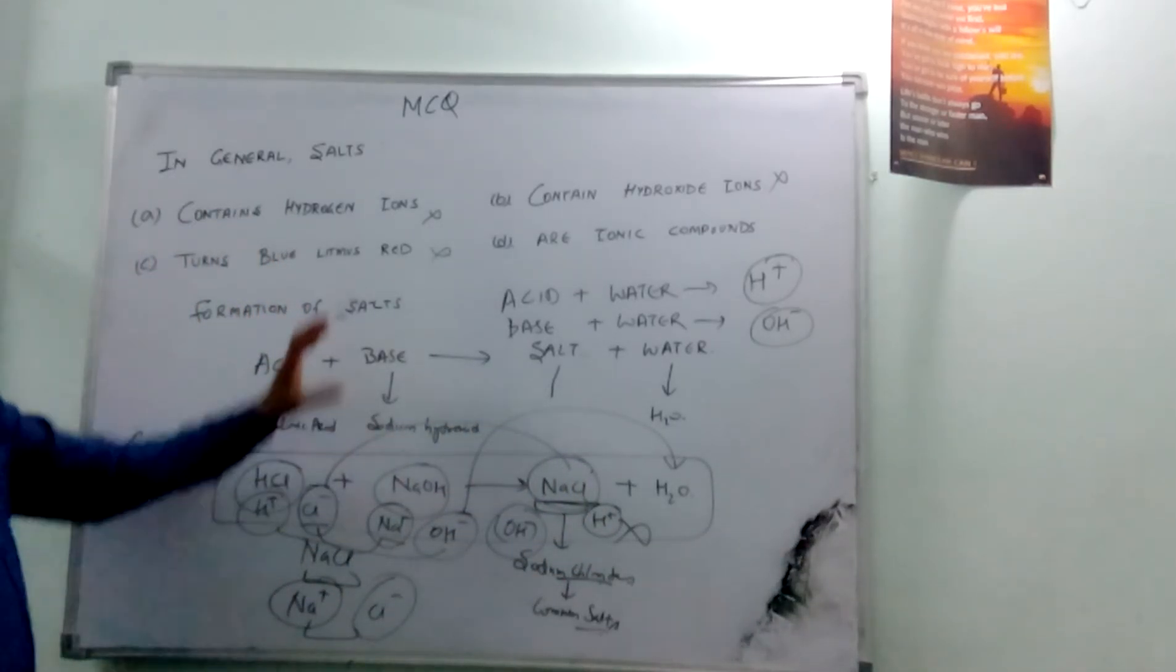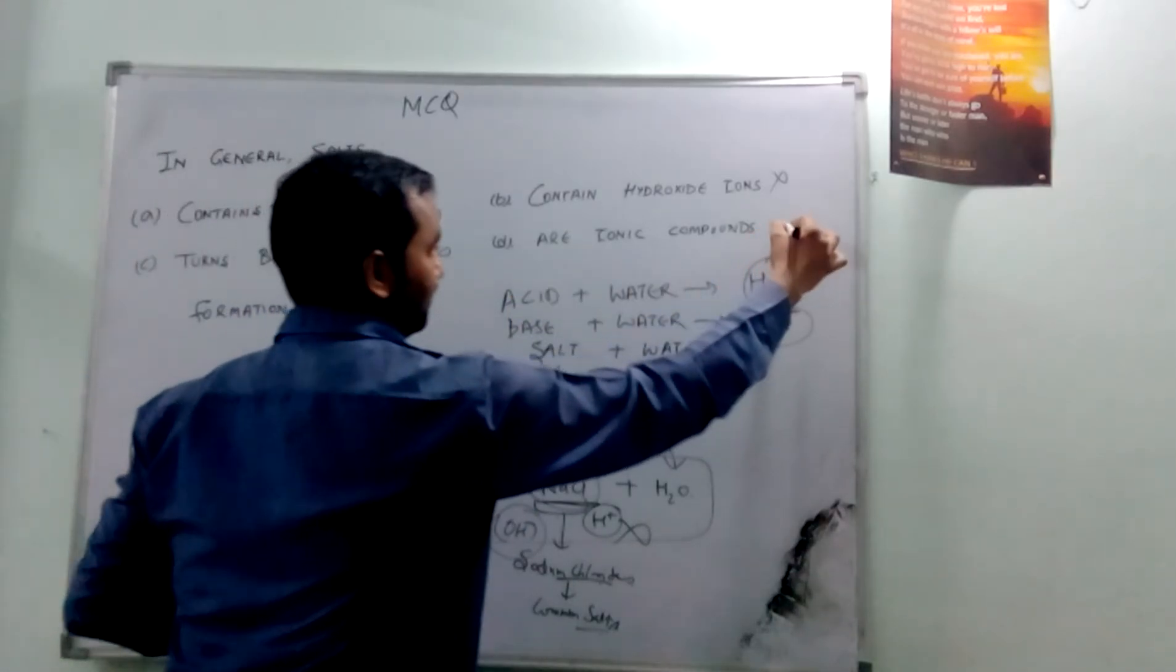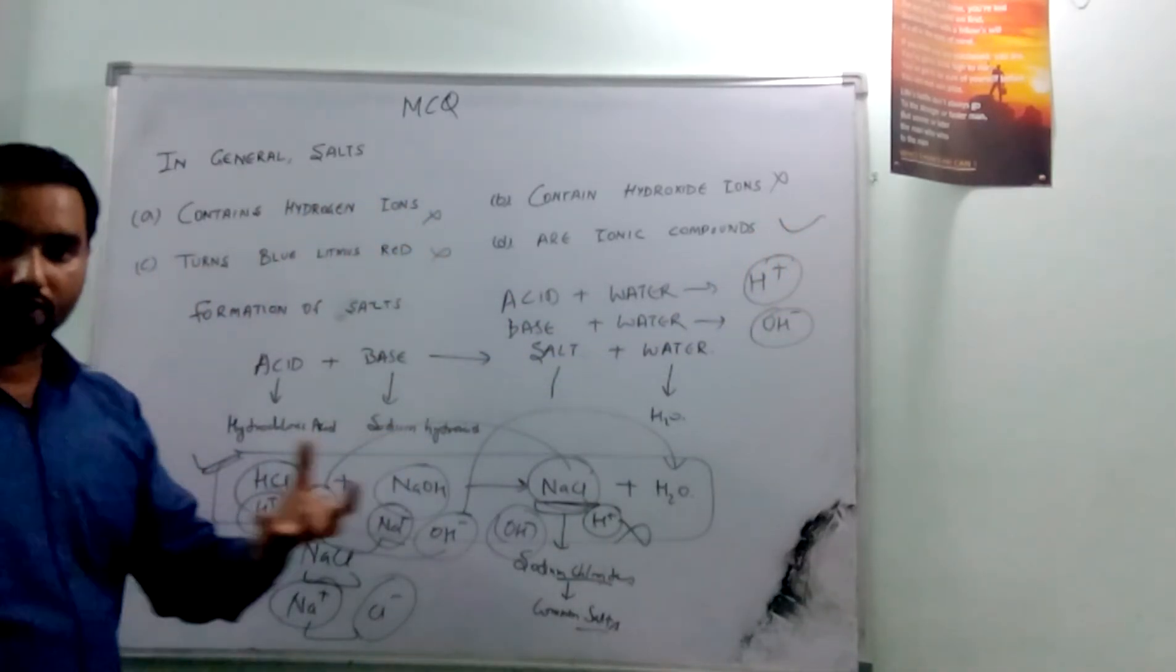And this chlorine negative and sodium ion and chloride ion combine to form this salt. And is here. So our option, the correct option for this question is, all the salts are ionic compounds.